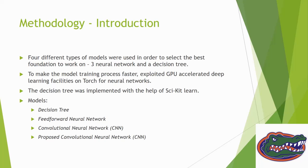For methodology, after pre-processing, I've been working on four different types of models. By looking at their performance, we can select the best one to work on. Three are neural networks and one is a decision tree. To make model training faster, we exploited GPU-accelerated deep learning facilities on PyTorch for neural networks, so we don't need to waste one or two hours. The decision tree was implemented using scikit-learn.